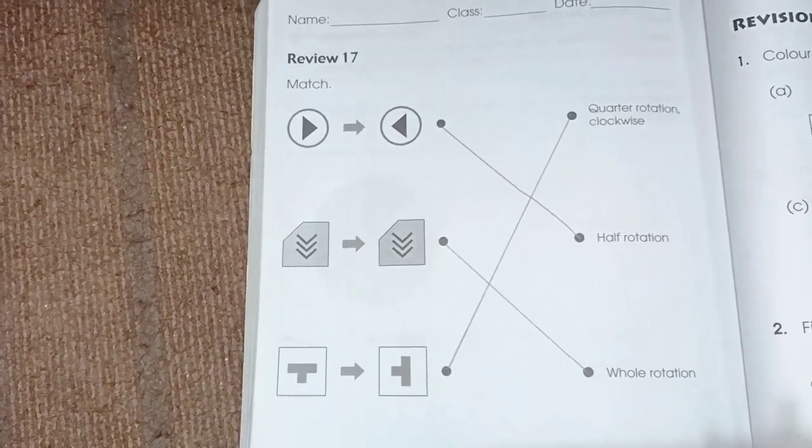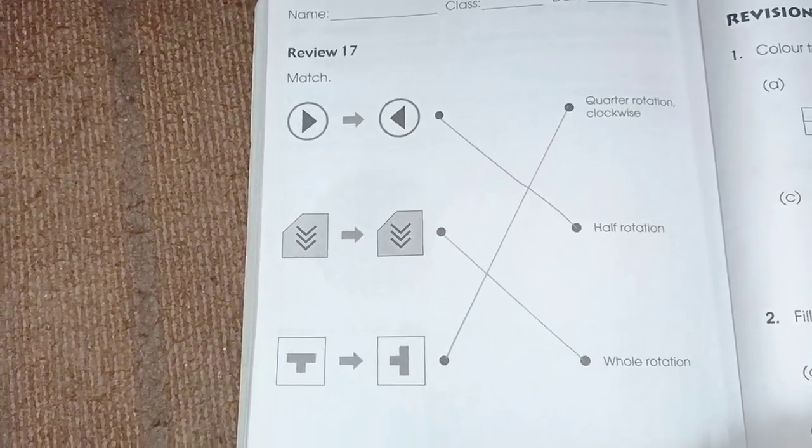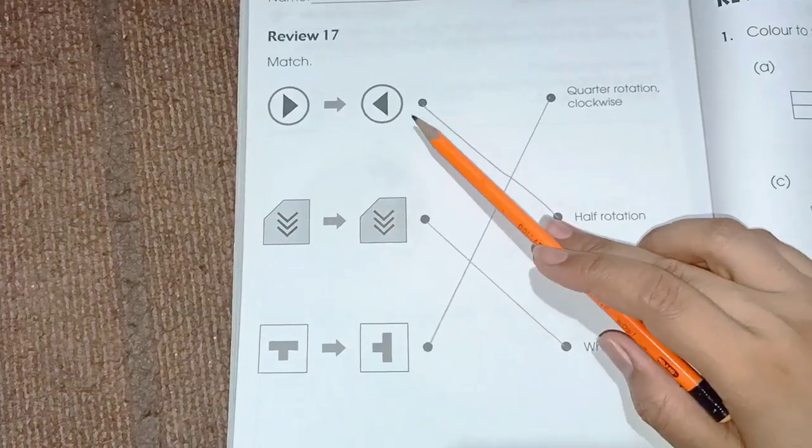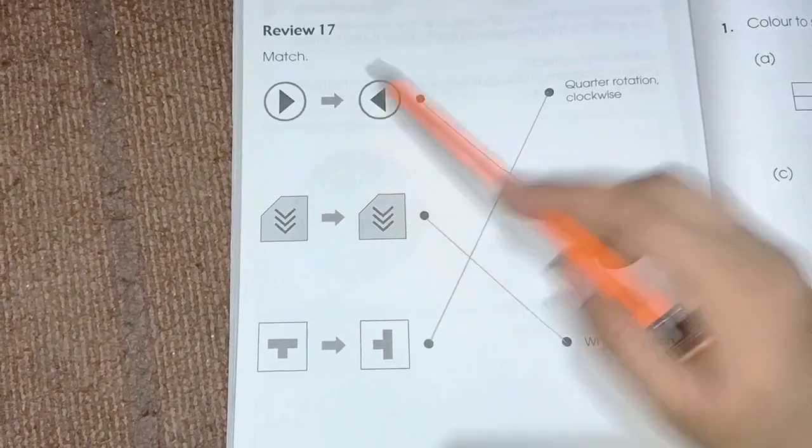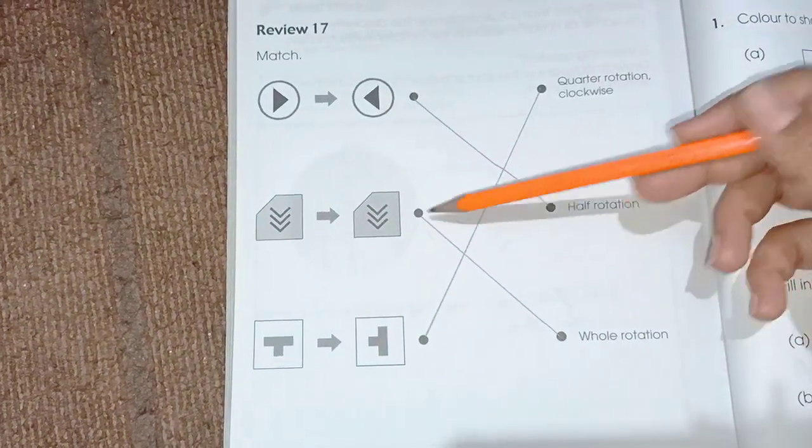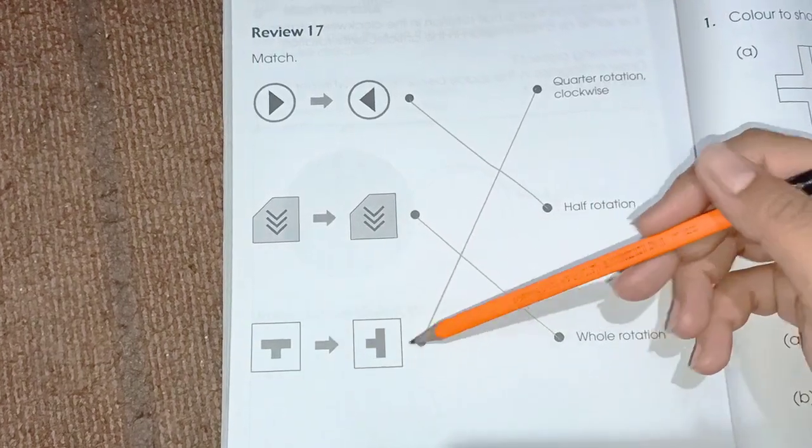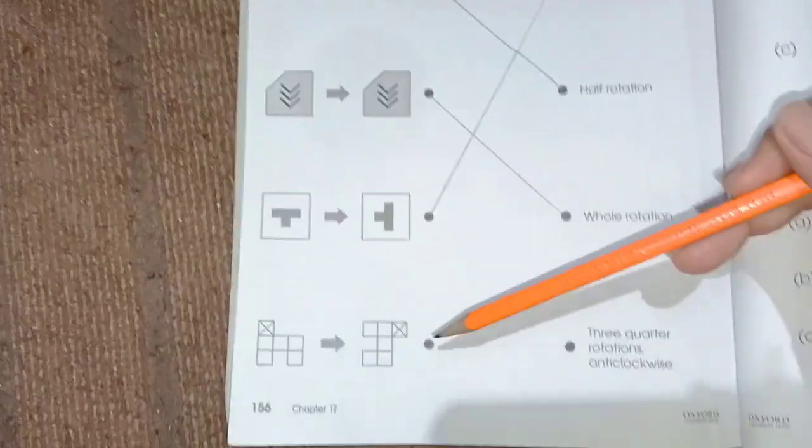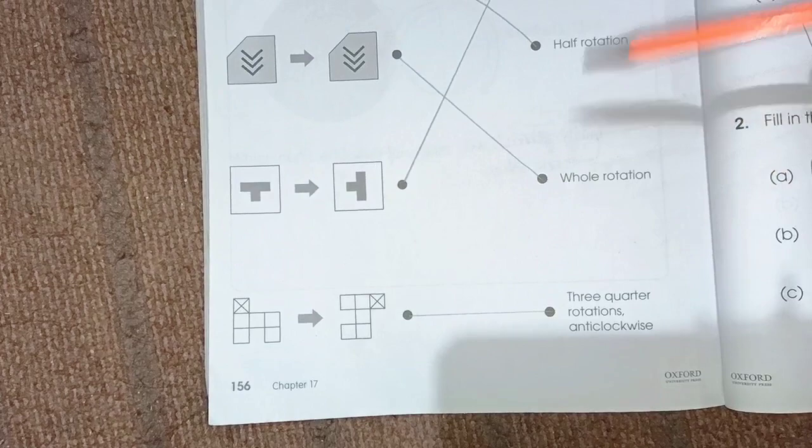The last page of the chapter number 17. Review 17. Here we have D shape: half rotation, this is whole rotation, this is a quarter rotation, and the last one is three-quarter rotation.